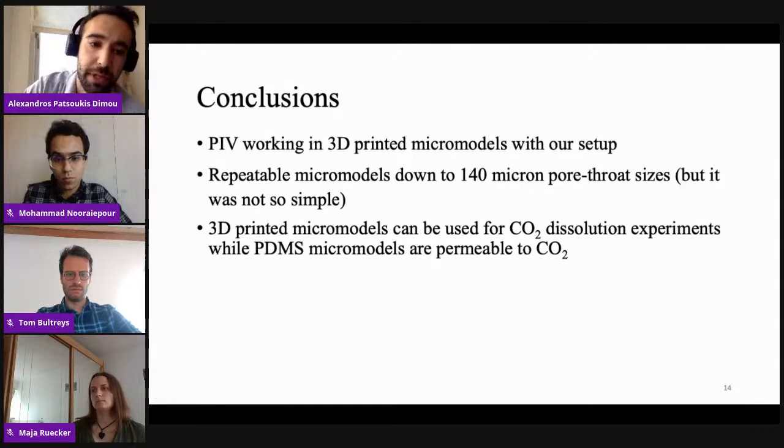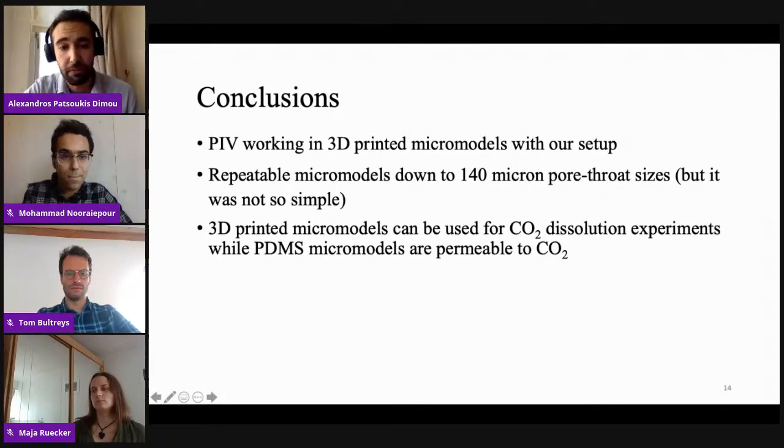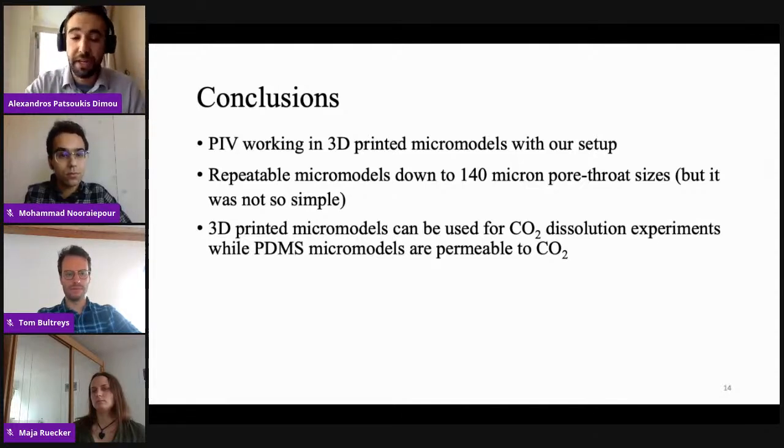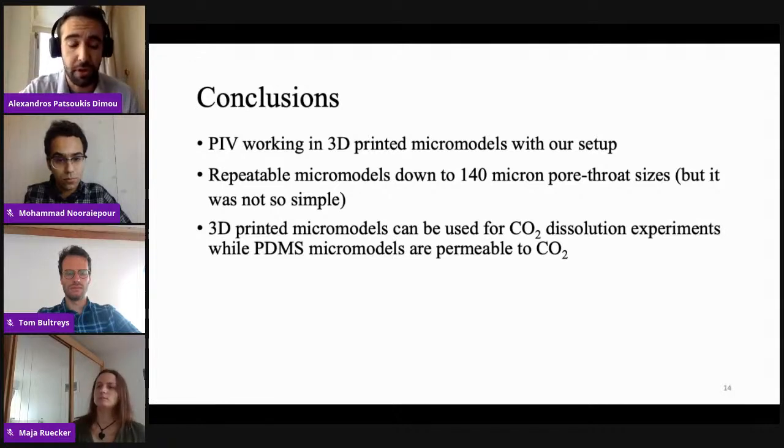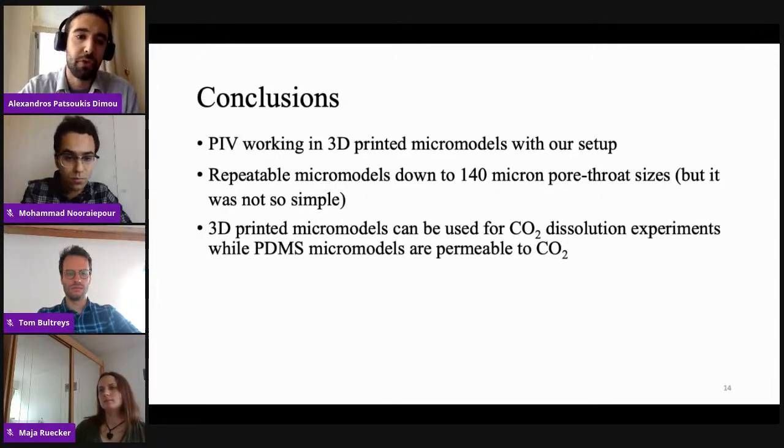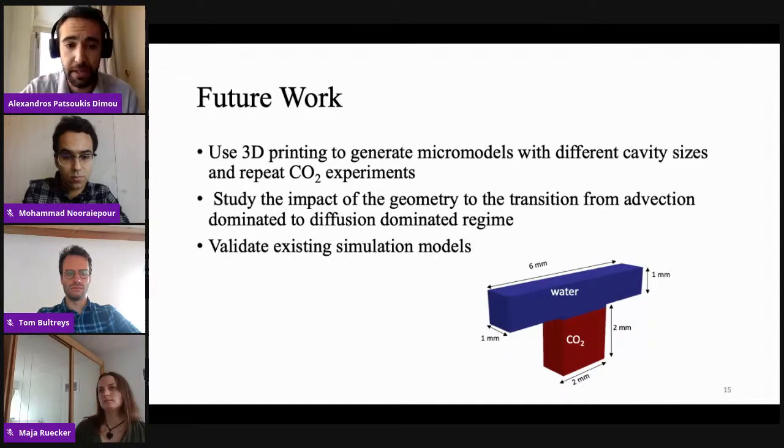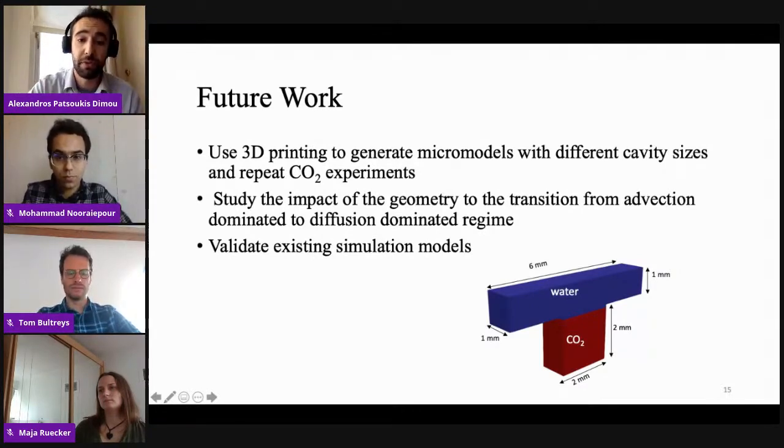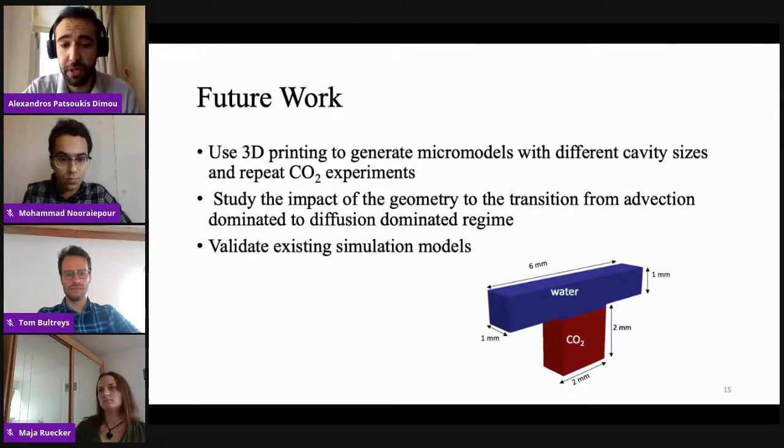So conclusion: PIV is working for 3D printed micromodels with our setup. This is something we wanted to check. We can get repeatable micromodels at 140 micron pore throat sizes. But as I showed, it was not that simple. It needs a lot of tricks in order to get the printer to do that. And 3D printed micromodels can be used for CO2 dissolution experiments in the future, while PDMS micromodels cannot really be used because they're permeable to CO2. So as future work, we want to use 3D printing to generate different cavity sizes and repeat those CO2 experiments. We didn't have a chance due to the labs being closed for all this time. And we want to study the impact of the geometry to the transition from advection dominated to diffusion dominated regime for CO2 dissolution and validate existing simulation models.